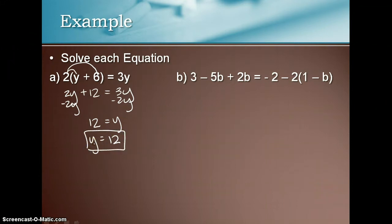Okay. So that was a pretty straightforward example. b says 3 minus 5b plus 2b is equal to negative 2 minus 2 times the quantity 1 minus b. Again, the first step is to distribute in that negative 2.